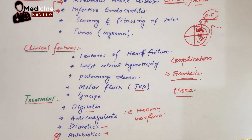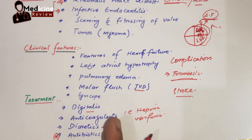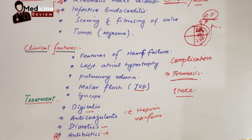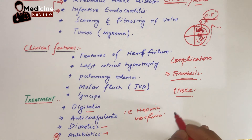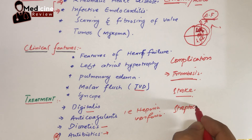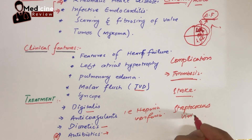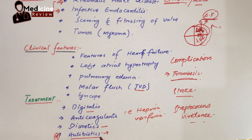Antibiotics are an important part of treatment to remember. Since the valve is already damaged, there is a high chance of infective endocarditis. For example, a patient with chronic rheumatic heart disease already has heart disease, making them at high risk for infective endocarditis — most commonly caused by Streptococcus viridans. To prevent this, antibiotics should be given. Thank you so much.